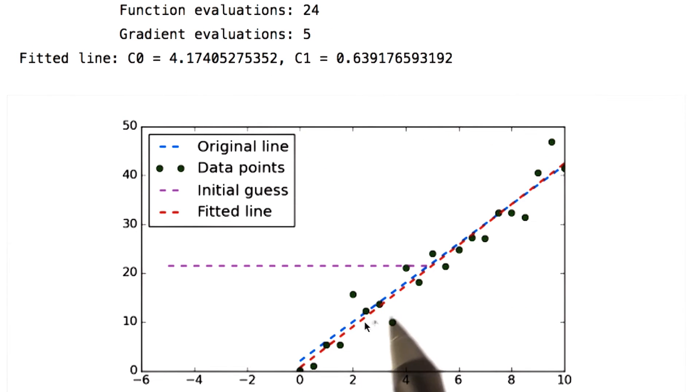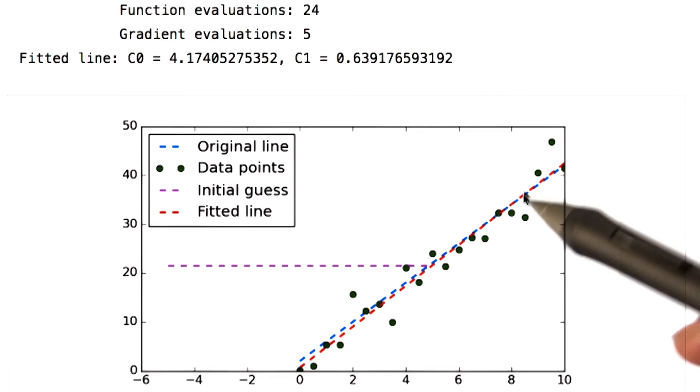Our original line is this blue line. Of course, the minimizer doesn't know anything about that. These green dots are our noisy data, where we just added noise values to the blue line. Now we're asking our optimizer, okay, find the equation of the line that best fits this data.